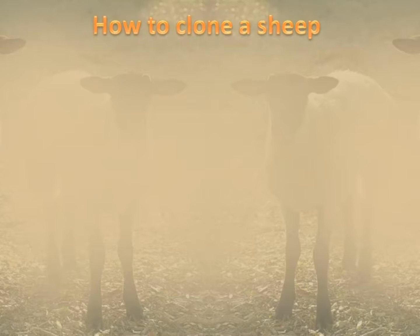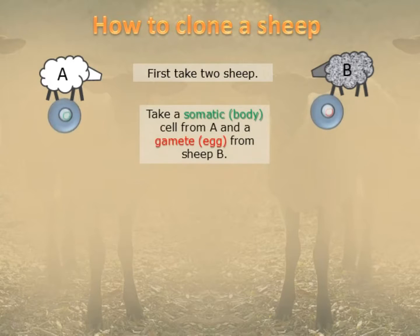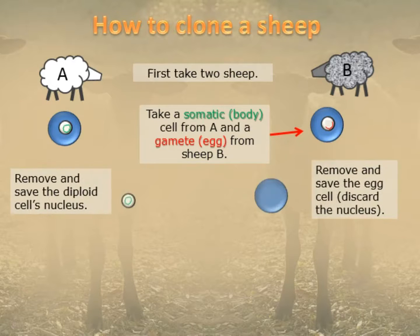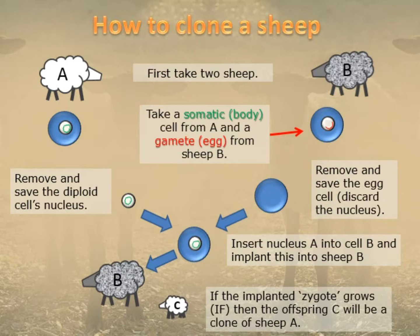Let's review that visually. Take two sheep — sheep A and sheep B. We take a somatic cell from sheep A and an egg cell with only half the genetic information from sheep B. We remove the nucleus from sheep A's somatic cell, save the egg cell from sheep B but discard its nucleus, then put them together and allow it to develop. We insert the resulting embryo into sheep B, and at the end of the pregnancy the offspring — sheep C — will be a clone of sheep A. That's if the implanted zygote grows, because this is not always successful.